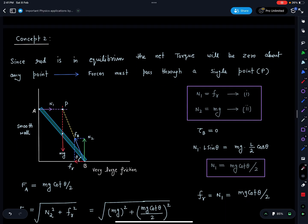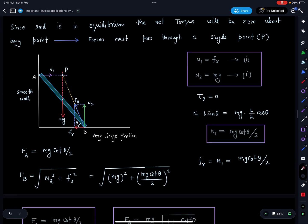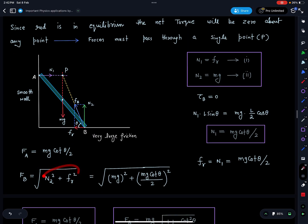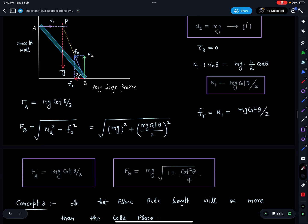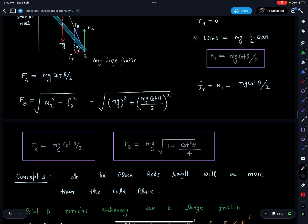So FA is known to you because force contact force at A, there is no friction here, so that is equal to N1 only. Now contact force at B is a resultant of N2 and friction. Friction value is known to you, N2 is anyways mg, so these values are known to you. So total contact force at B we are going to get as under root of N2 square plus FR square. If you simplify this, mg we can take outside, so mg times root of 1 plus cot square theta. Now both values we are getting in terms of theta.